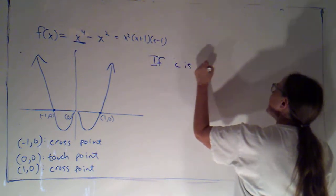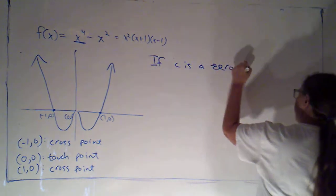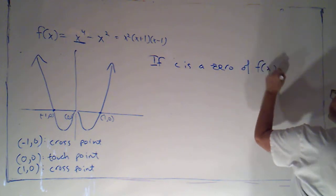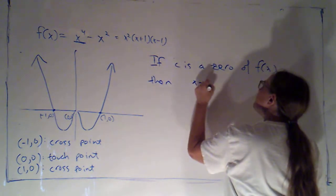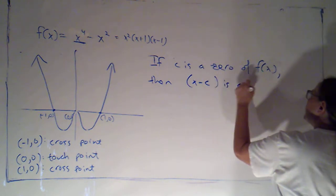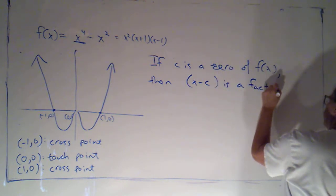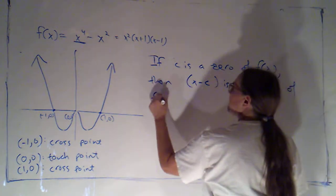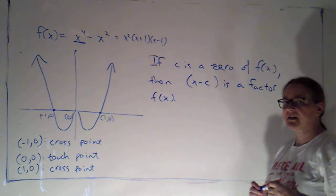But I can say, if c is a zero of f of x, then x minus c is a factor of f of x. That's always going to be the case.